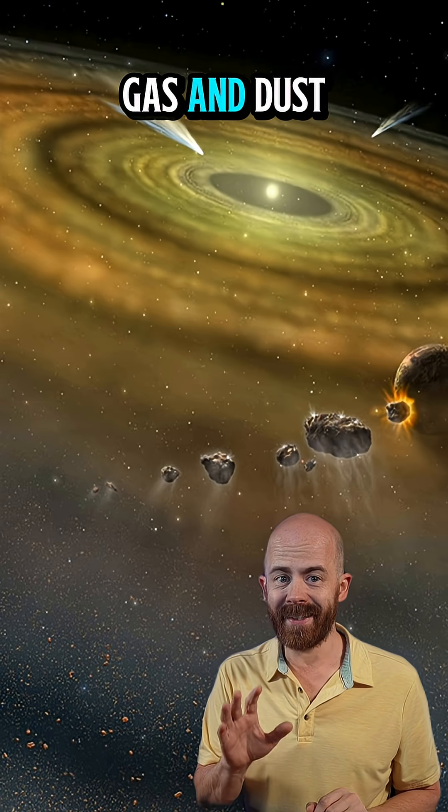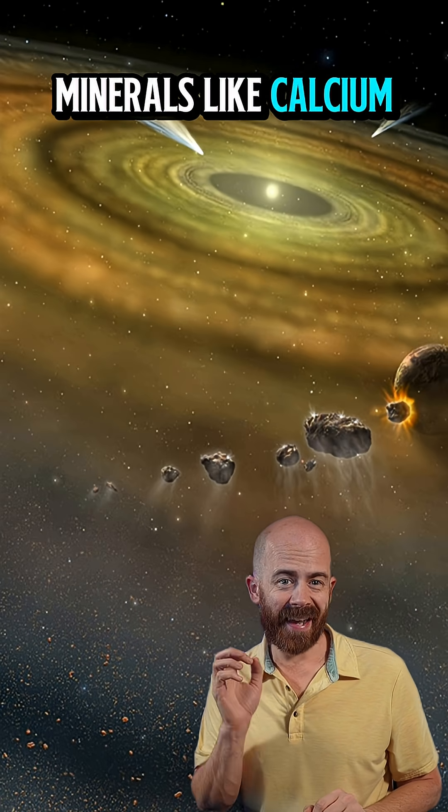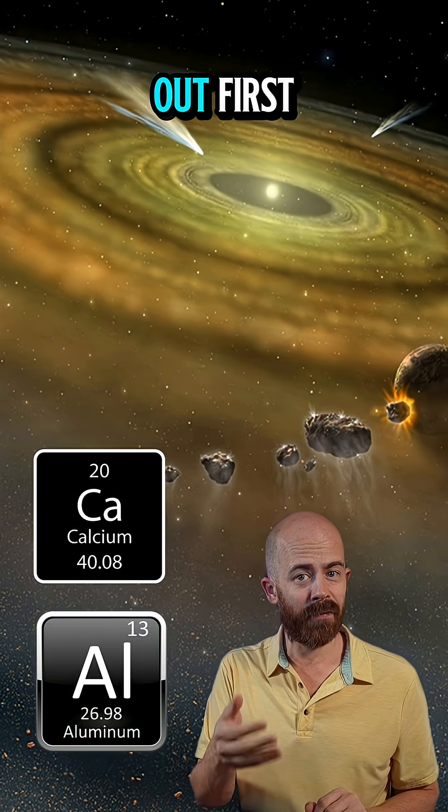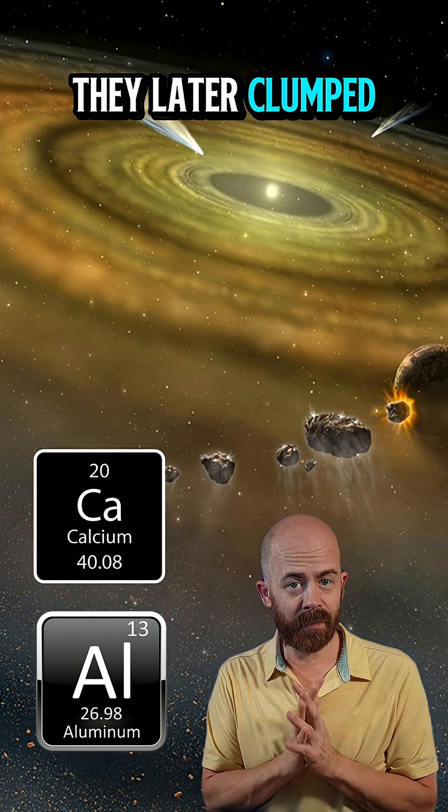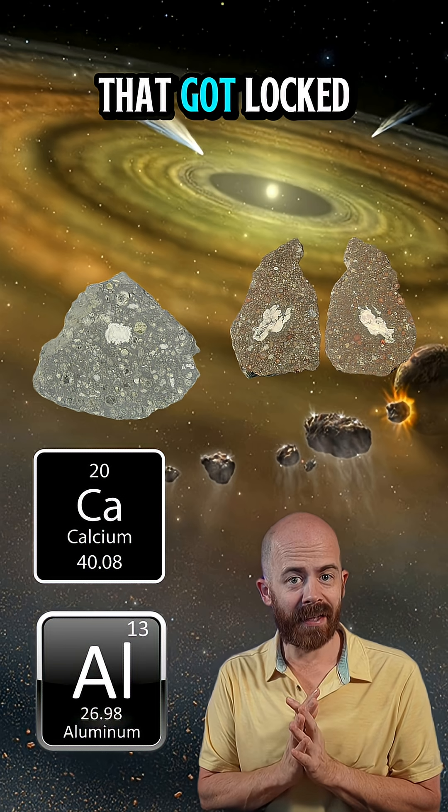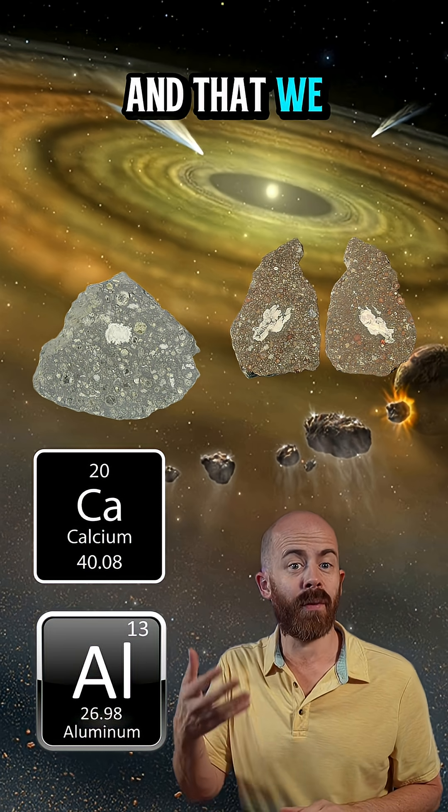In the hot, turbulent disk of gas and dust that surrounded it, minerals like calcium and aluminum condensed out first because they can withstand very high temperatures. They later clumped together into inclusions that got locked into the meteorites that fell to Earth and that we find today.